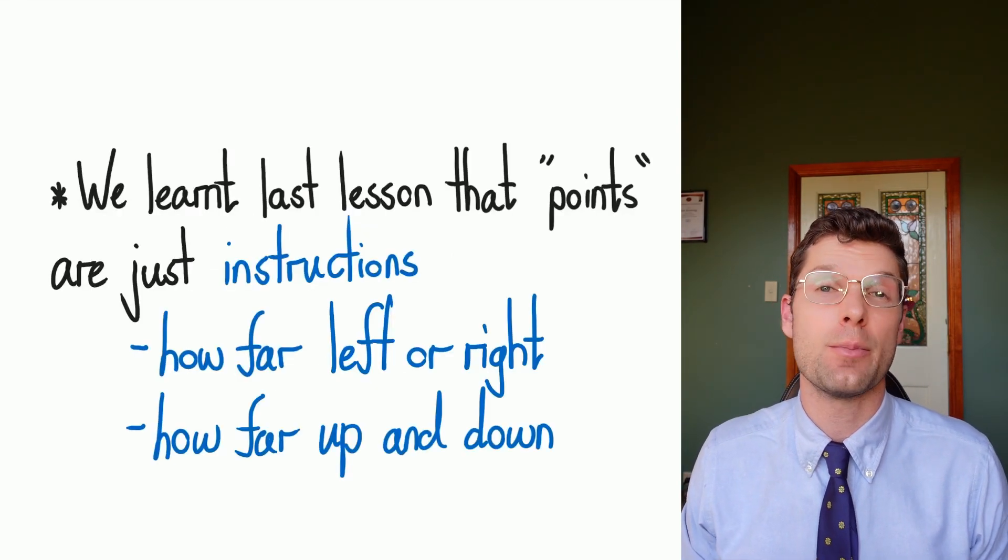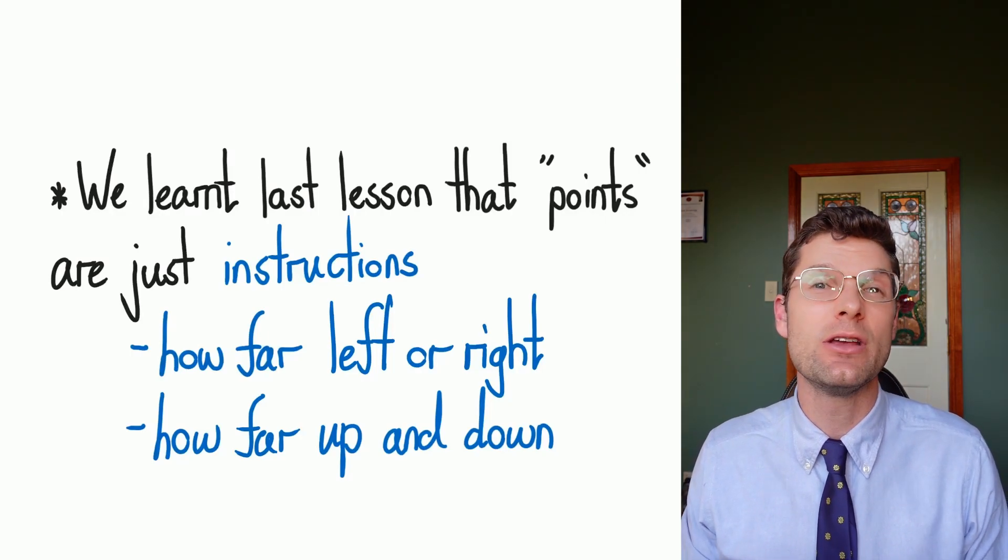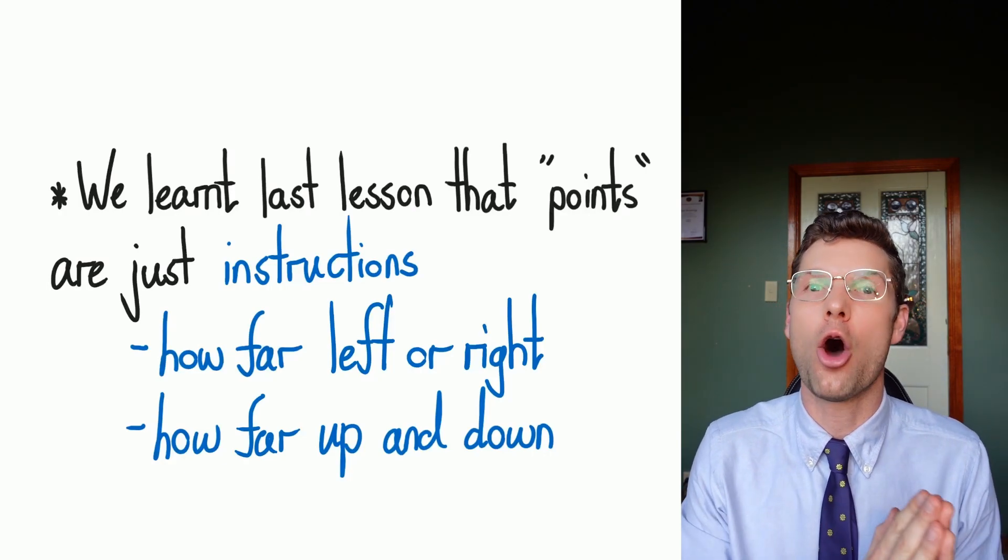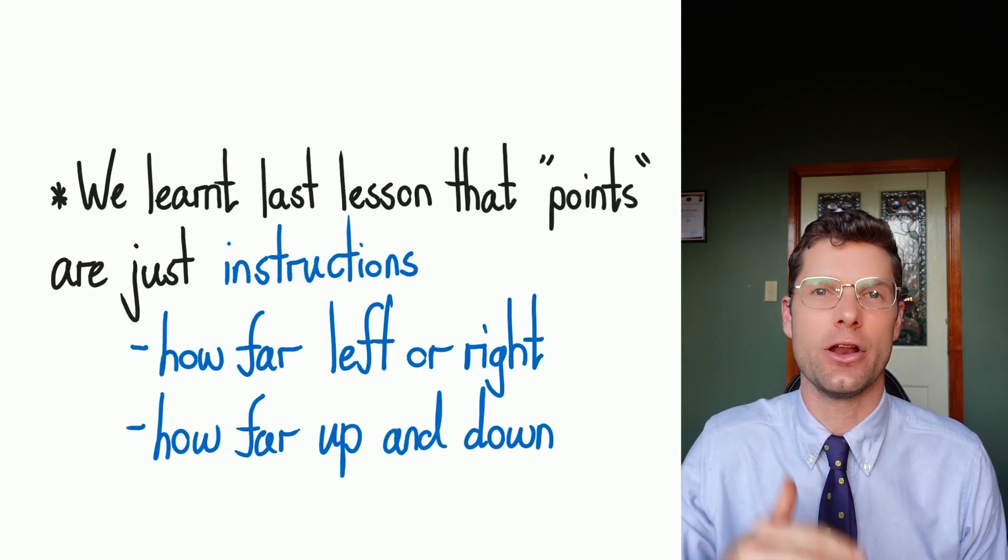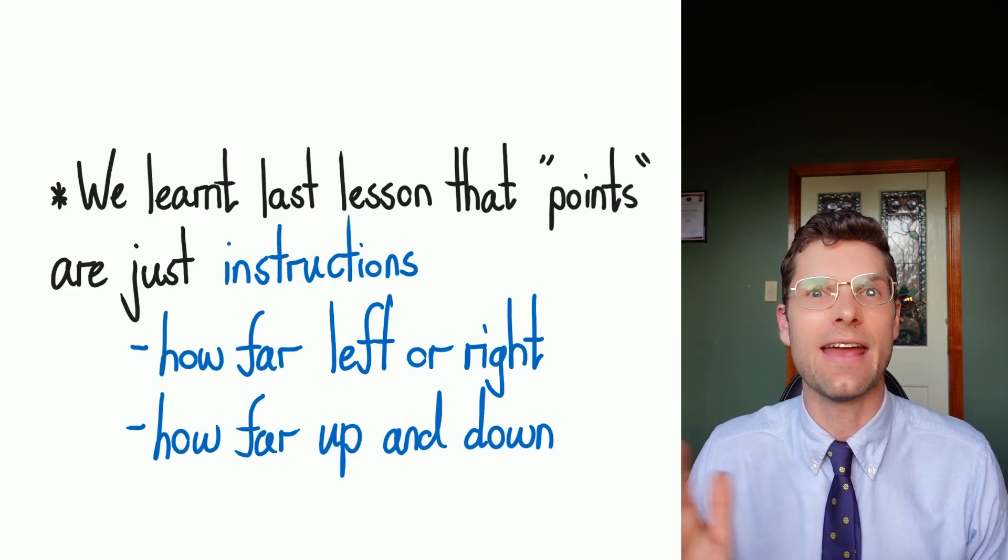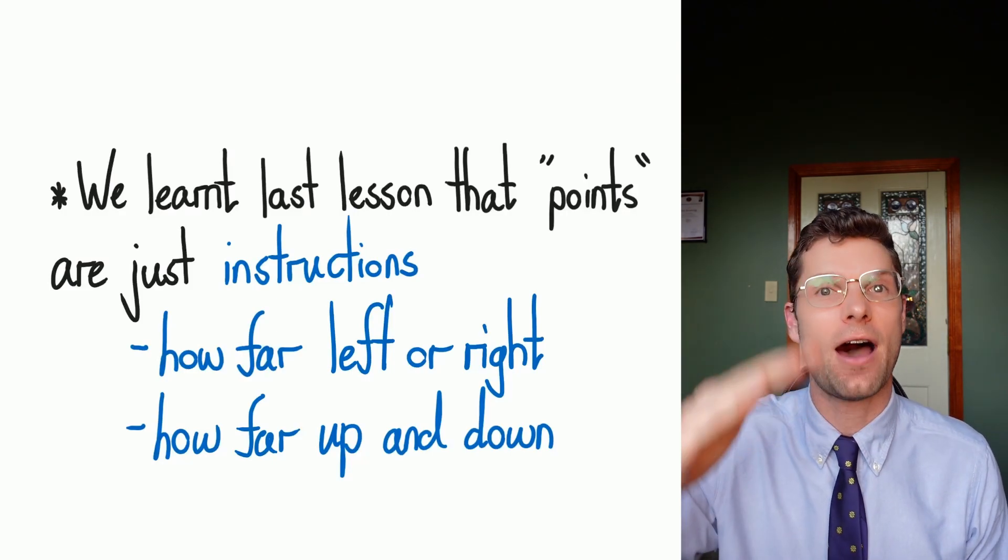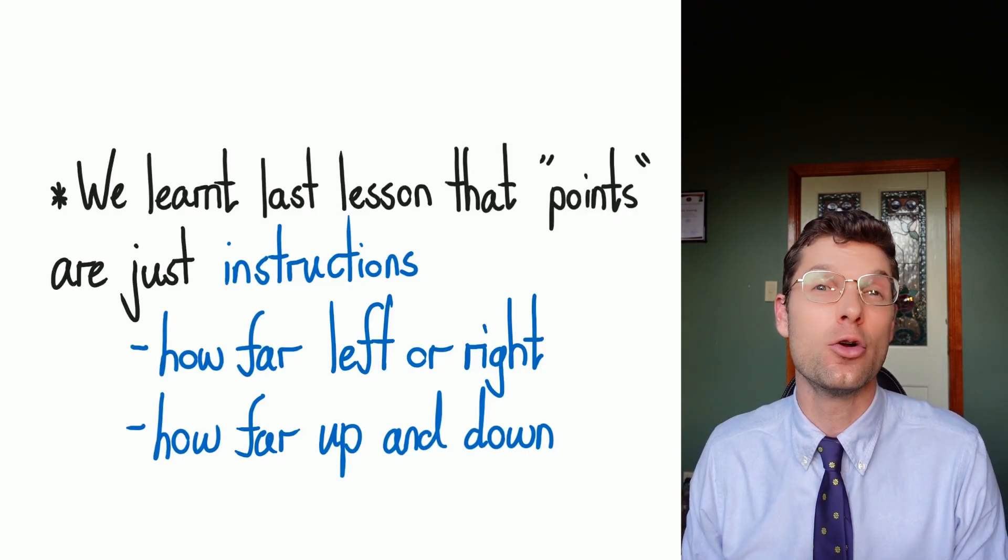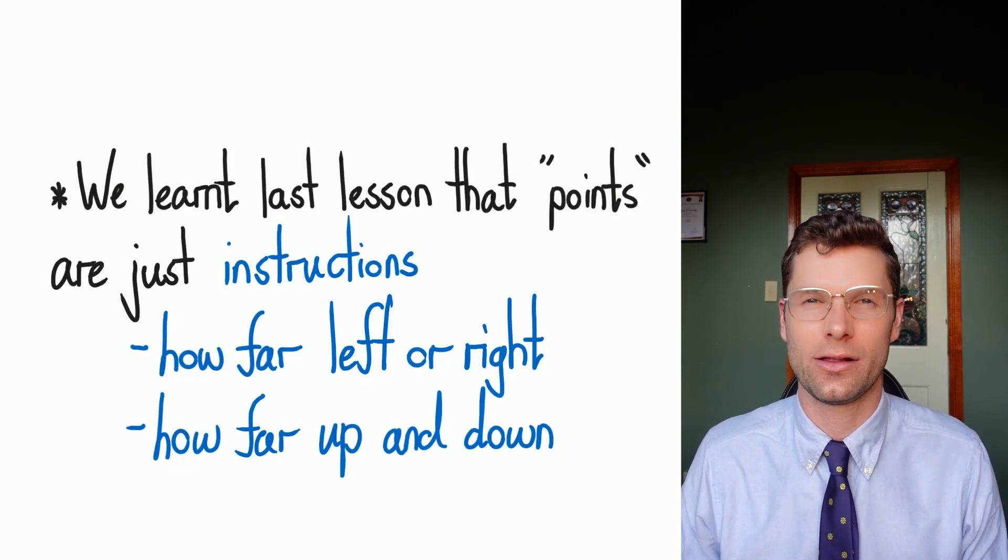We learned last lesson that plotting points on a graph is really just instructions or directions on how to get to that point, but only going horizontally first and then vertically second. We're saying, how far across are we? And then how far up or down are we? We use positive and negative numbers in order to give these instructions as quickly as possible.